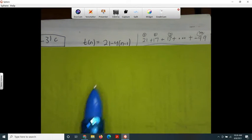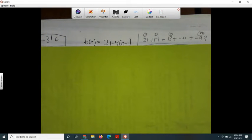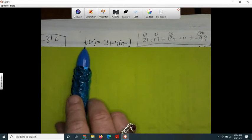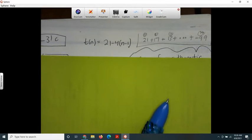Letter B says how many terms are in the series, and so when you do that you can just plug in your negative 99 right here and solve for n. You did that and you got 31.